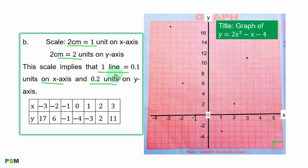To get this value, you have 10 lines. So, you divide the number of units by number of lines. That is 1 divided by 10, you have 0.1. If you come here, you divide 2 by 10, you have 0.2.